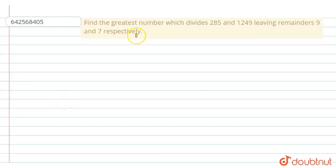The question says: find the greatest number which divides 285 and 1249 leaving remainders 9 and 7 respectively.